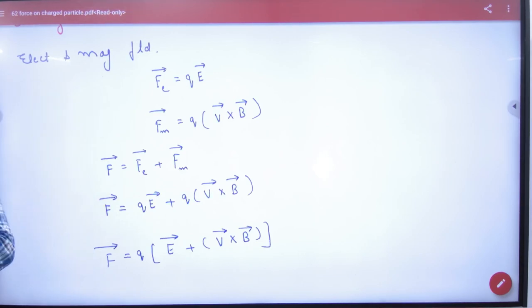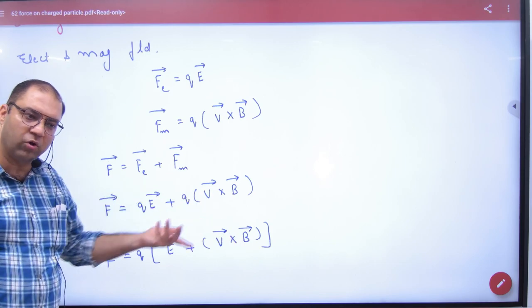Now, in some cases, Lorentz force is just magnetic force in this chapter. Because in this chapter, what do we do with E? Zero. So what is your result? Magnetic force is Lorentz force.